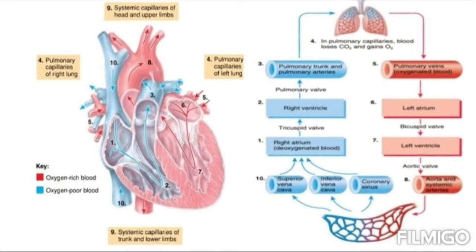Here we can observe in this image the different types of flow charts: red indicates oxygen-rich blood and blue indicates oxygen-poor blood, traveling through different capillaries. There are four different types of capillaries shown: pulmonary capillaries of the left lung, pulmonary capillaries of the right lung, systemic capillaries of the head and upper limbs, and systemic capillaries of the trunk and lower limbs, where blood loses oxygen and gains CO2.